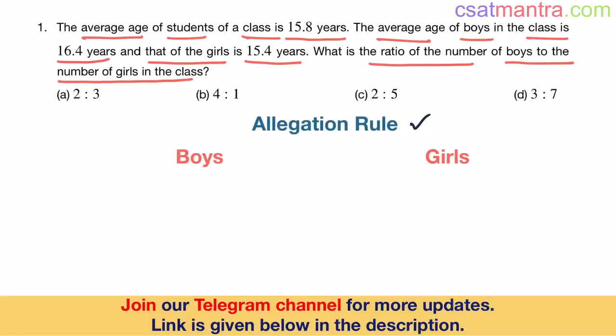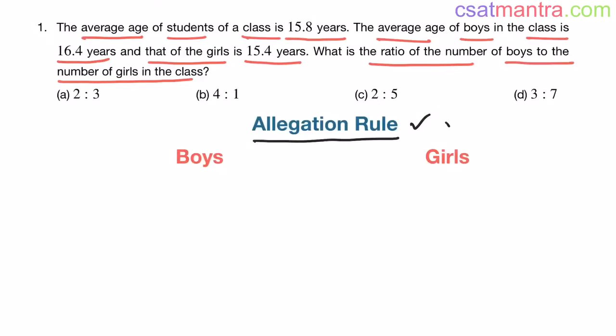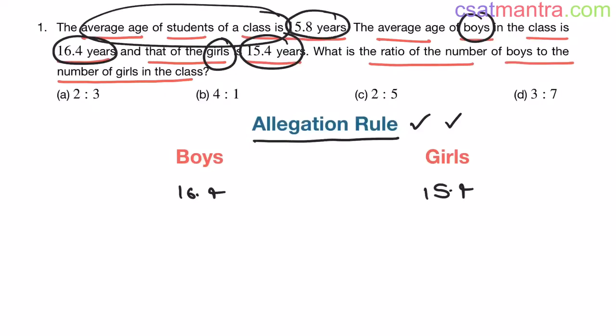Now let's solve this problem using allegation rule. The allegation method which we have learned in the allegation and mixture chapter. Allegation rule is applied on attributes. Average is an attribute, that's why we are applying allegation rule on average here. Boys average is 16.4 years, girls average is 15.4 years. Now mixture's average, the average age of students of a class, is 15.8 years.